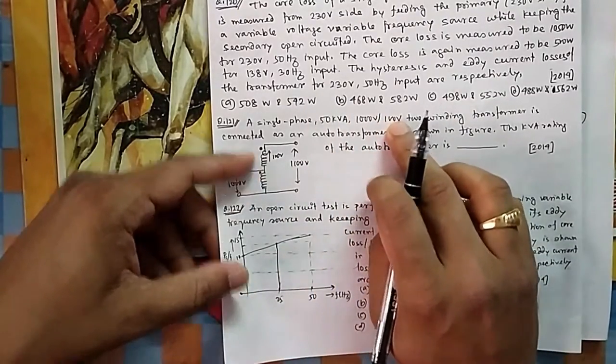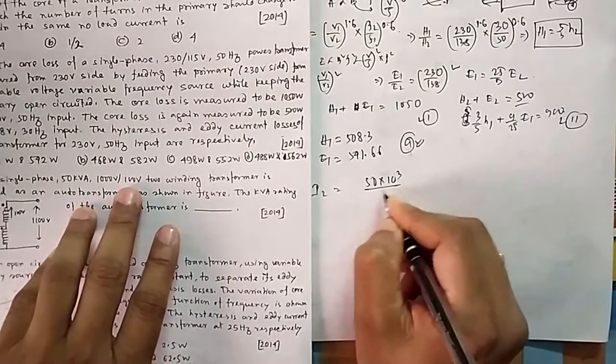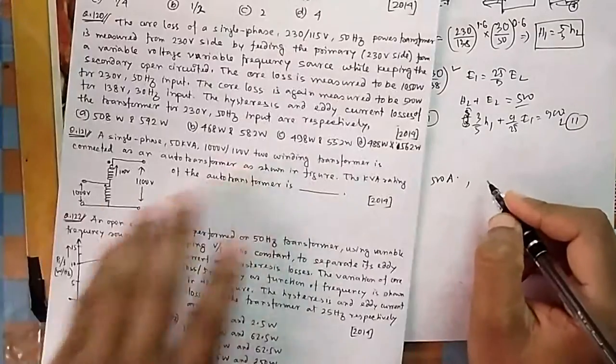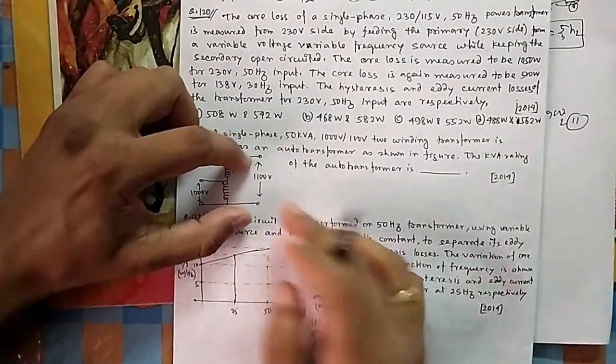As per this rating, what is the current it can take? So you find out that current, that is I2 maximum current. I2 can take is 50 times 10 to the power 3 divided by 100, so it will be 500 ampere.